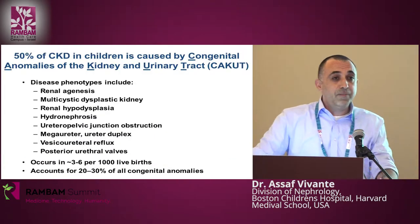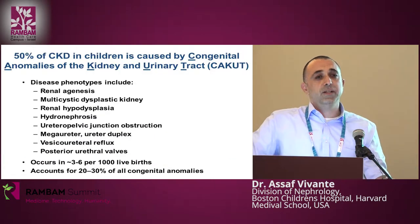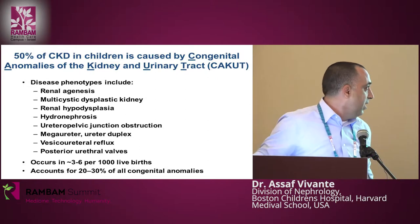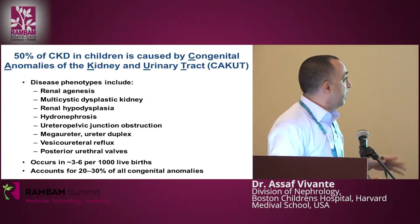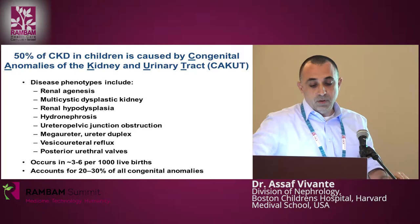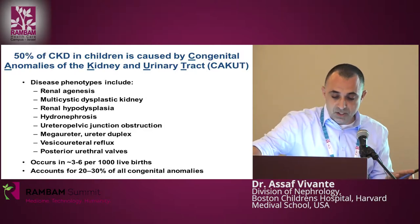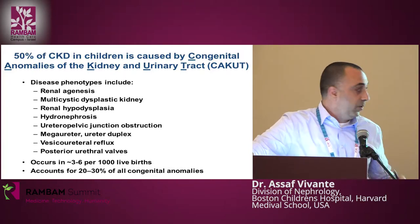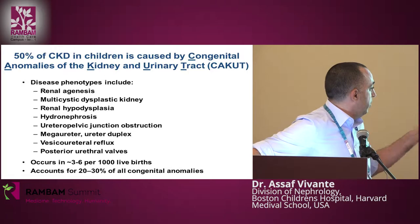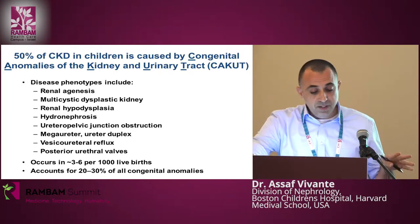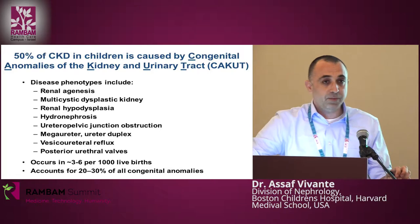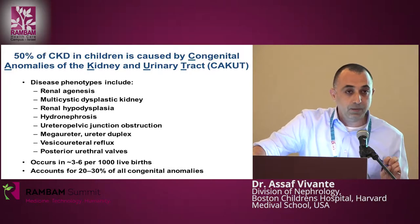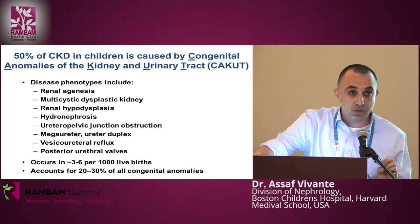About 50% of chronic kidney disease in children is caused by congenital anomalies of the kidneys and urinary tract. This includes a very wide spectrum of phenotypes, among them renal agenesis, multidisciplinary dysplastic kidneys, renal hypodysplasia, hydronephrosis, ureteropelvic junction obstruction, duplex ureters, and others. It is a very common condition, occurring about 3 to 6 per 1,000 live births, and accounts for 20 to 30% of all congenital anomalies.